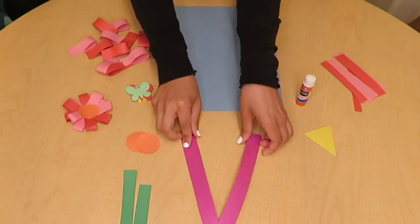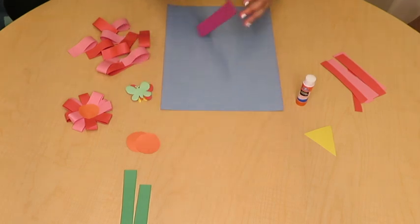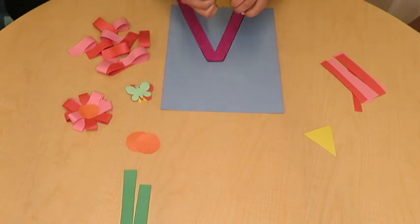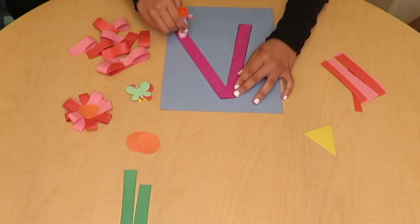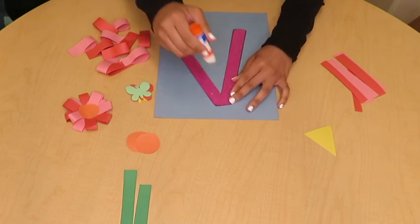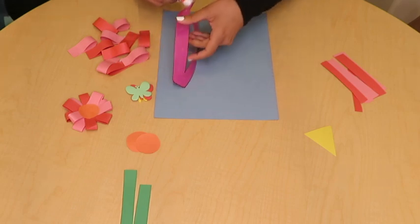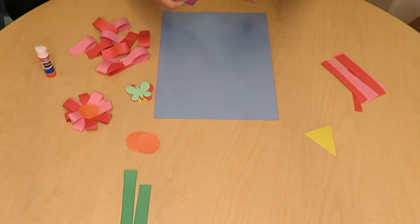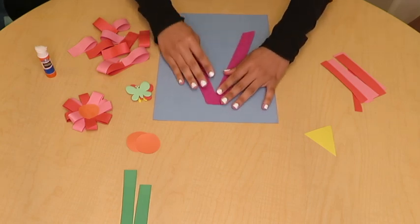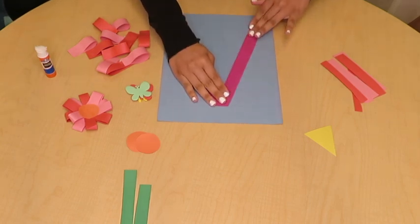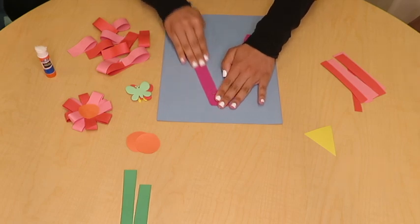So first we're going to take our V, and we're going to glue it onto our paper. So I'm going to take the glue, and I want to make sure I put glue everywhere so that it sticks very well. And we're going to glue it down on our paper. There we go.